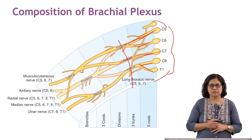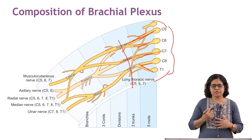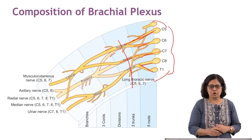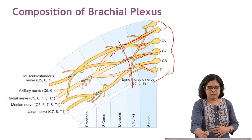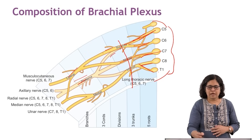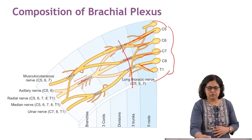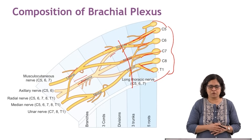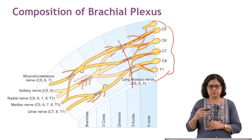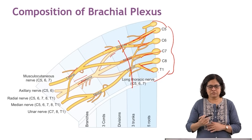There are six divisions — three anterior and three posterior. These reunite to form cords: the anterior divisions of the first and second trunks form the lateral cord, all posterior divisions of all three trunks form the posterior cord, and the anterior division of the inferior trunk forms the medial cord. So we have five roots, three trunks, six divisions, and three cords.